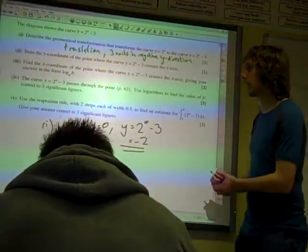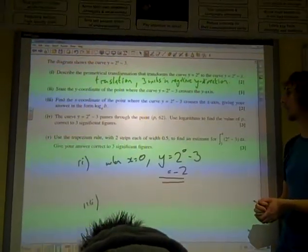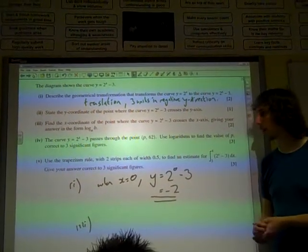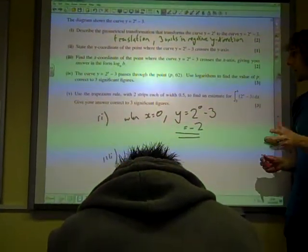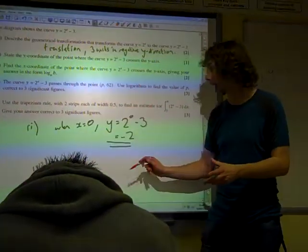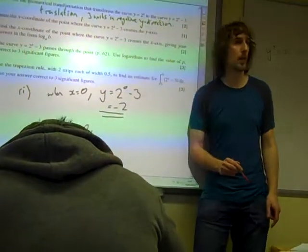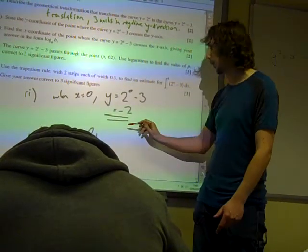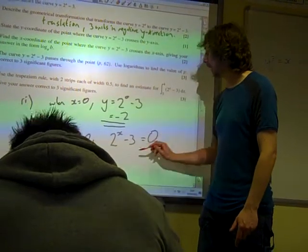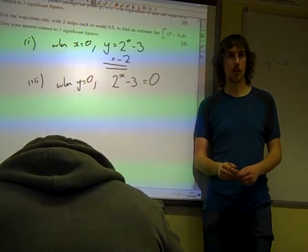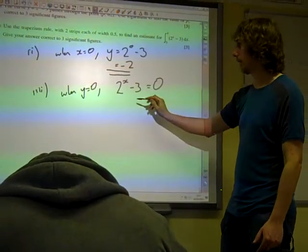Part 3 says find the x-coordinate at the point where the curve crosses the x-axis, giving your answer in the form log base a of b. Well, where it crosses the x-axis, that's when y is 0 now, isn't it? So, we're looking at the same equation, but we want to know what happens when y is 0. If y is 0, we've got 2 to the x minus 3 equals 0.